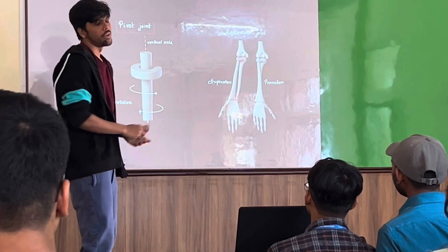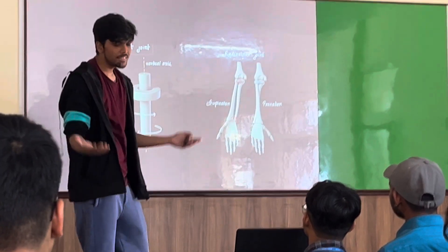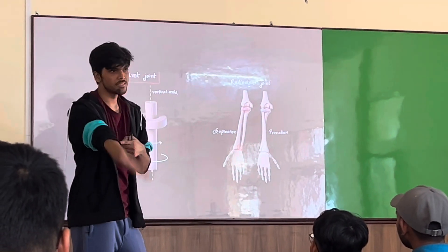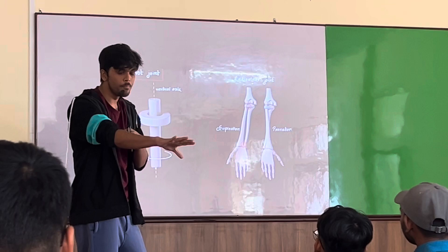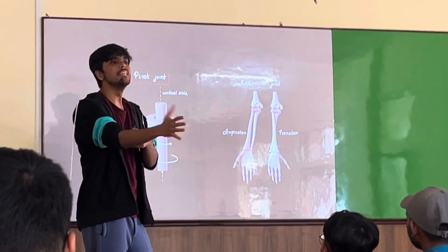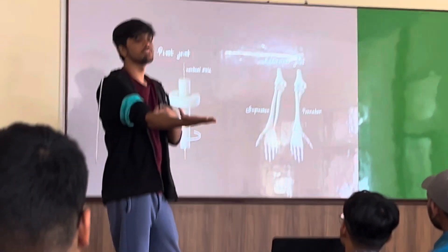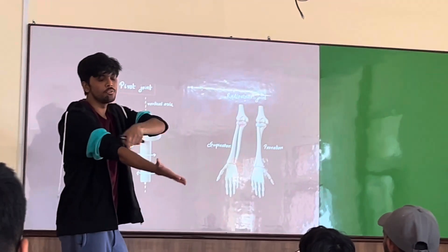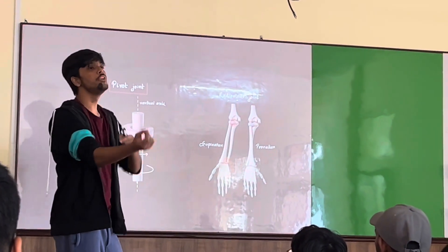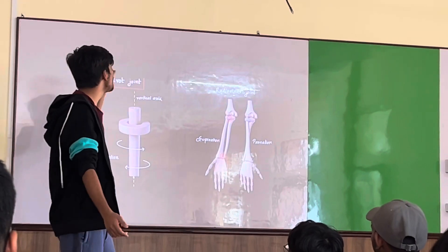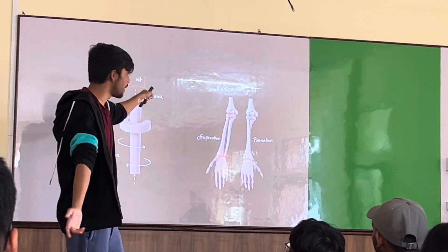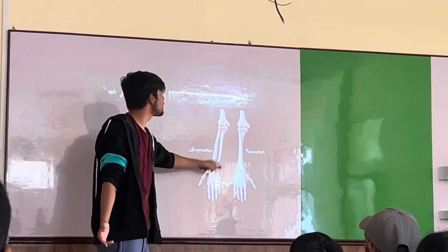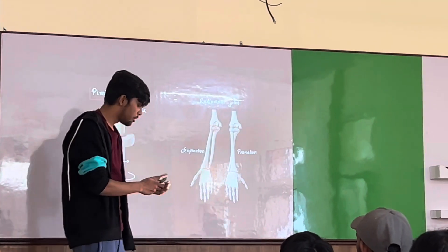Pivot joint. At the elbow joint, flexion and extension are possible, but what about the rotation movement shown here? This movement occurs through a vertical axis passing through the bone, and it is due to a joint called the pivot joint. For example, the proximal and distal radioulnar joints.